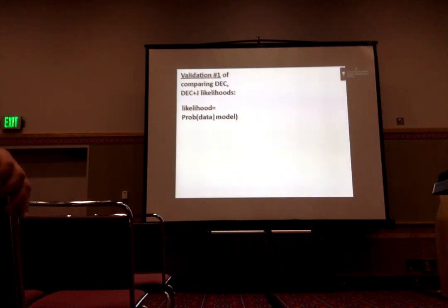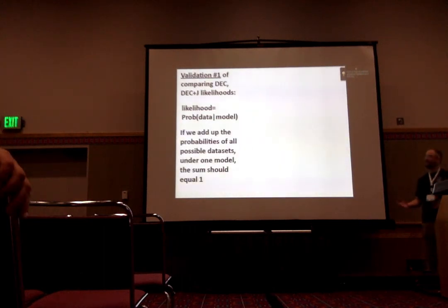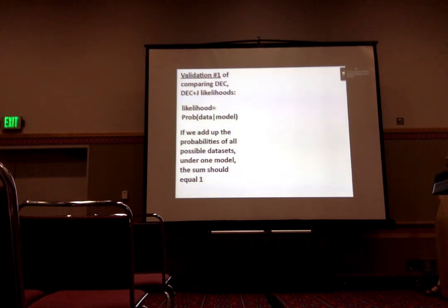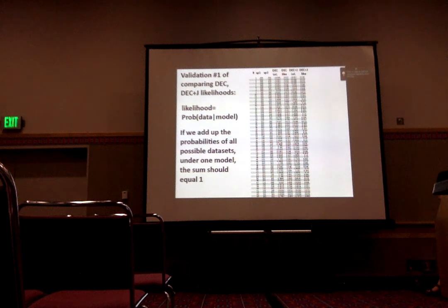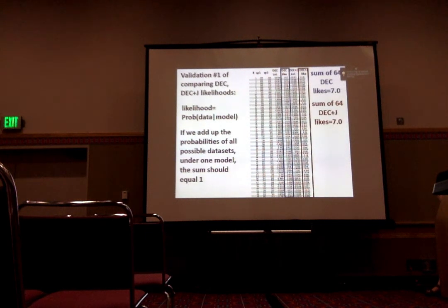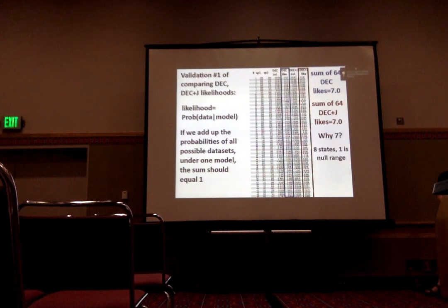There are two pretty simple reasons. The likelihood is the probability of the data given a model. For a discrete dataset, if we add up all the probabilities for all possible data patterns, that should equal one, and if you have that, then you have valid likelihoods. I did this experiment with a two-species tree with three areas — eight possible ranges, 64 possible data patterns — and calculated the likelihood under DEC and DEC-plus-J. You add them up and actually get seven under both models, because one of the eight ranges is the null range, an impossible ancestor. Multiply by one-seventh as base frequencies and you get one. So these are valid likelihoods and you totally can compare them.